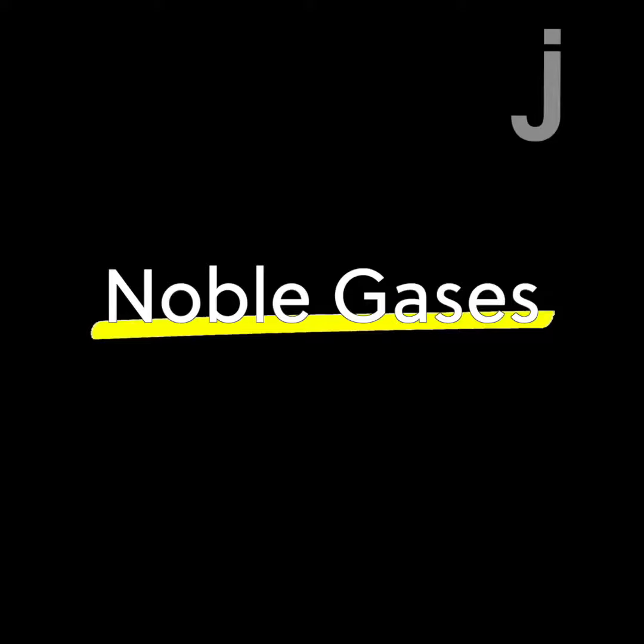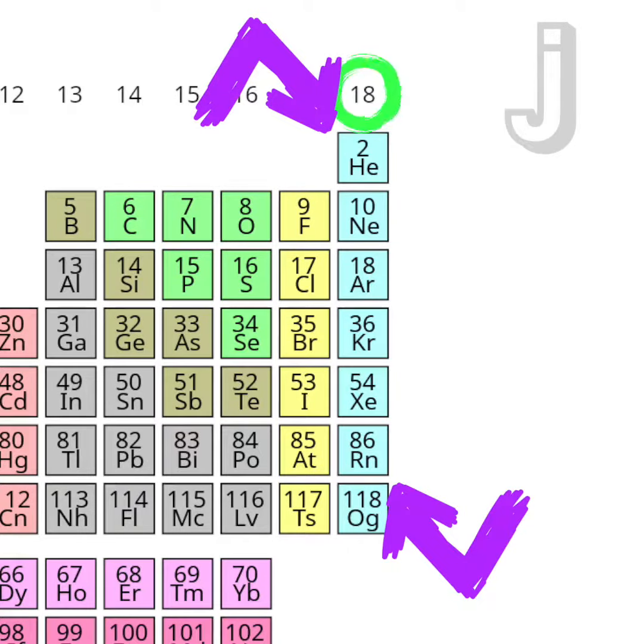So juicers, did you know that some elements on the periodic table have what's basically a team name? My favorite one of these is the noble gases. These are the elements in group 18 on the periodic table, and they're pretty different from most other elements.